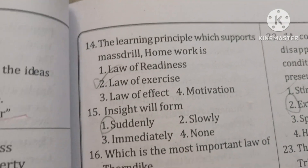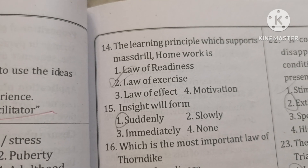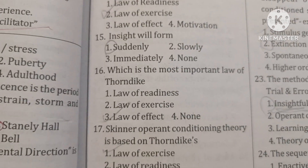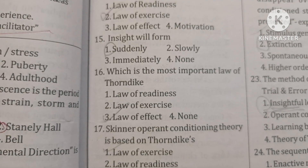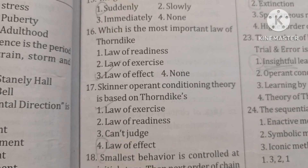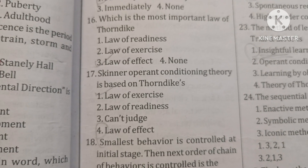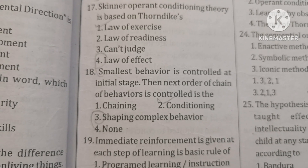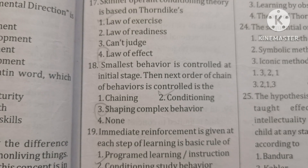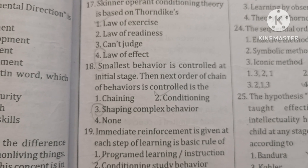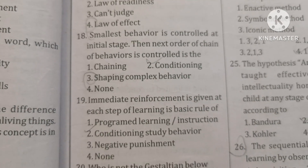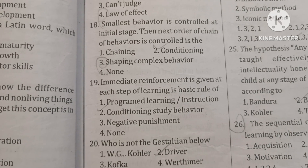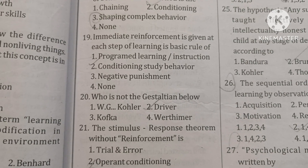The learning principle which supports mass drill homework is the law of exercise. Insight will form suddenly. Which is the most important law of Thorndike? That is the law of effect. Skinner's operant conditioning theory is based on Thorndike's law of effect. Smallest behavior is controlled at initial stage; the next order of chain of behaviors controlled is the shaping of complex behavior. Who is not the Gestaltian?